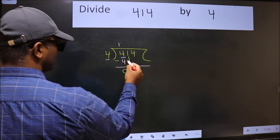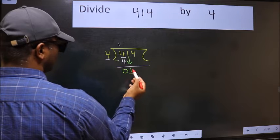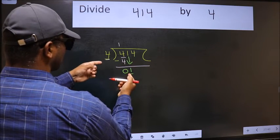After this, bring down the next number. So 1 down. Now here we have 1 and here 4. 1 is smaller than 4.